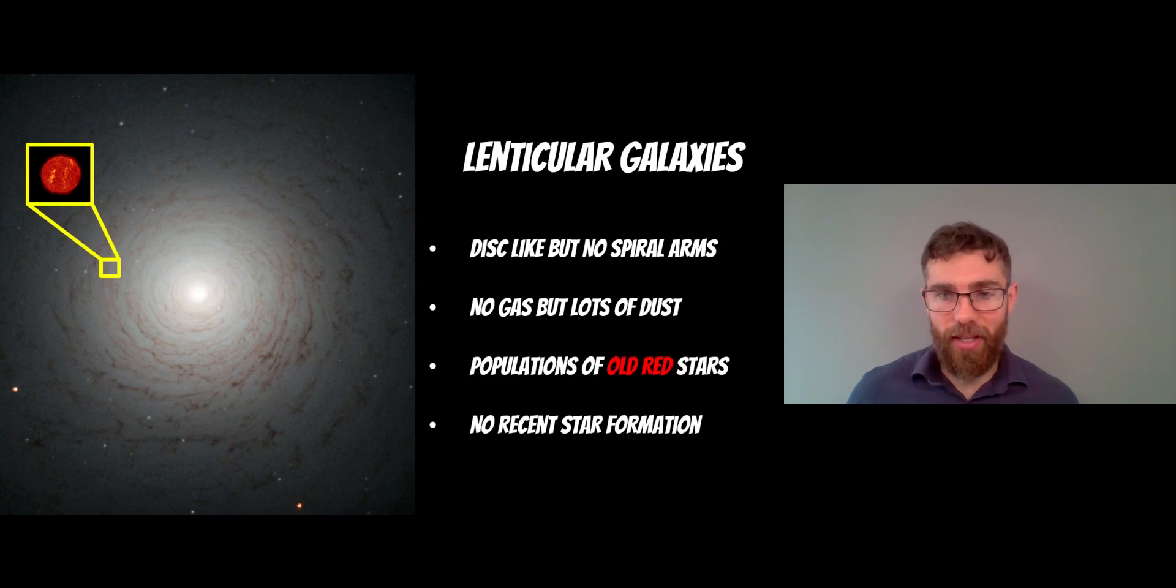Now, lenticular galaxies sit in between. They are disk-like. So they're still disk-like and they rotate around the center. So they have a disk structure, they rotate. But they don't have any spiral arms. They don't really have any gas. So they're gas depleted. But they've got lots of dust in their disk structure.